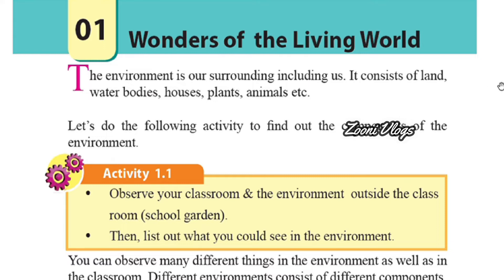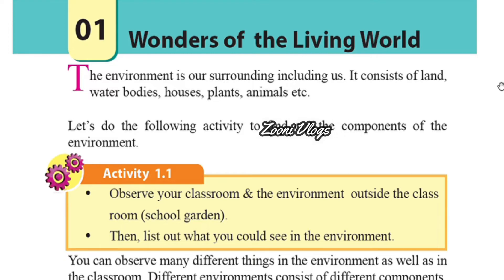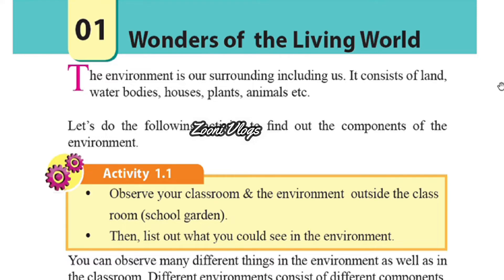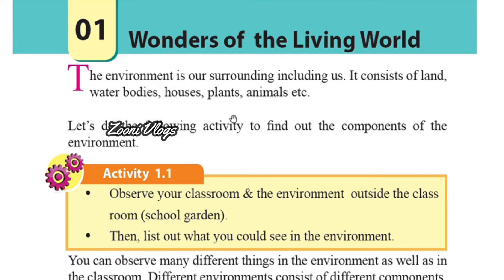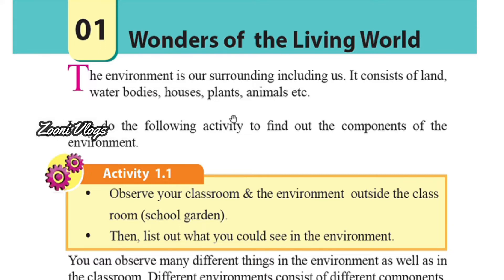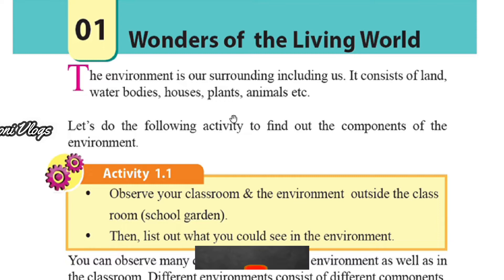Today I am going to start from the environment. Now I am going to read the paragraph from your science book. The environment is the surroundings including us. It consists of land, water bodies, houses, plants, animals, etc. Each environment is different from the other, and many more things are included in the environment.